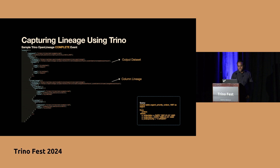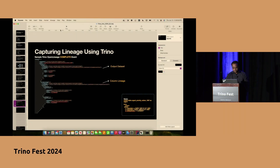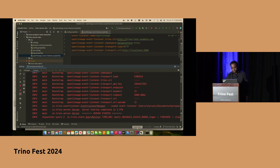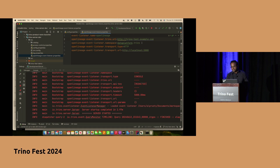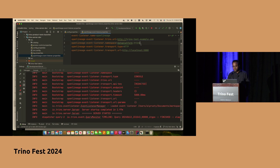Now that we've seen the schema end-to-end, let's see this live. I'm going to switch to demo mode. I have a standalone Trino server running in development mode with the open lineage event listener already hooked in. The event listener type is called 'open lineage', the Trino FQDN is specified, and the namespace is customizable — we're giving it 'data platform Trino'. For submitting events, we are going to use the open source lineage platform Marquez to demonstrate how the lineage looks.